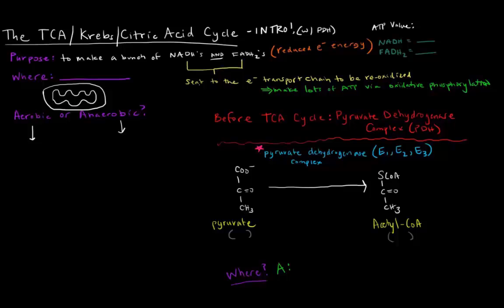So now, these reduced components can then later be sent to the electron transport chain, which we'll talk about in a future video, to be re-oxidized. Now the oxidation of these NADHs and these FADH2s is coupled to the phosphorylation of ADP to make ATP. That process is called oxidative phosphorylation, and we'll talk more about that later.